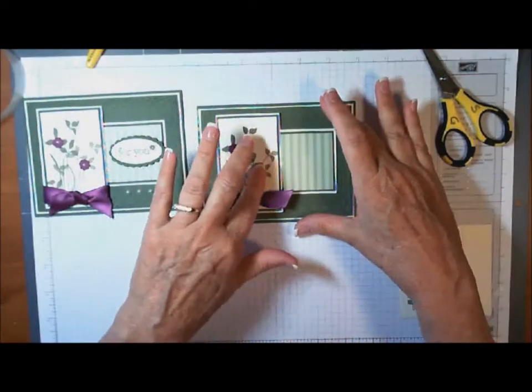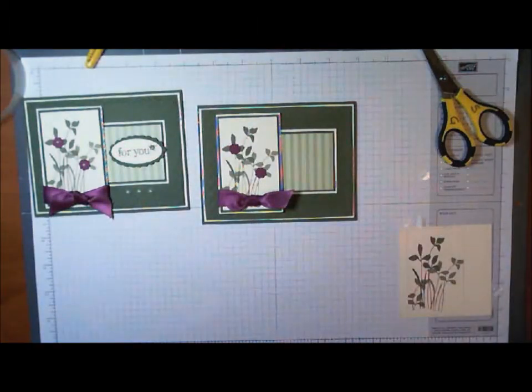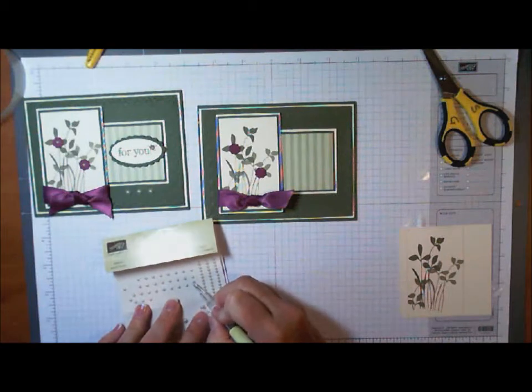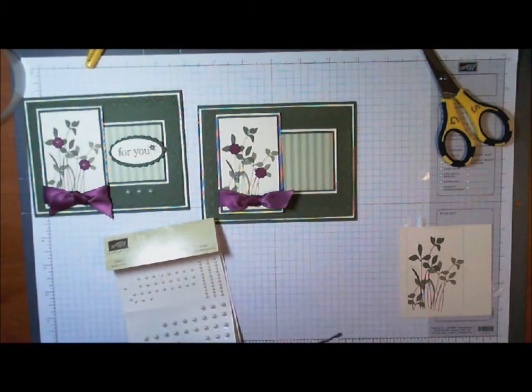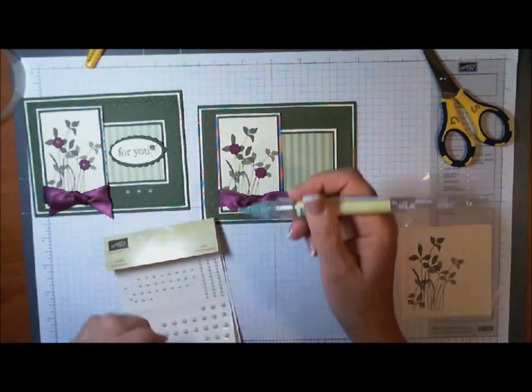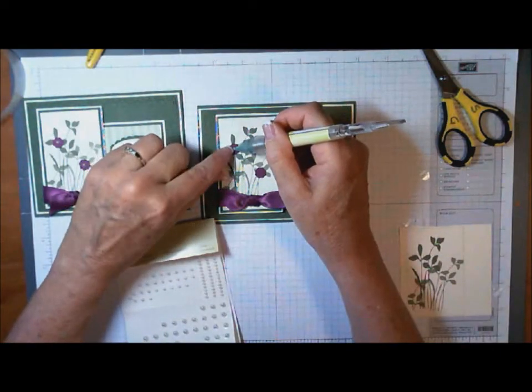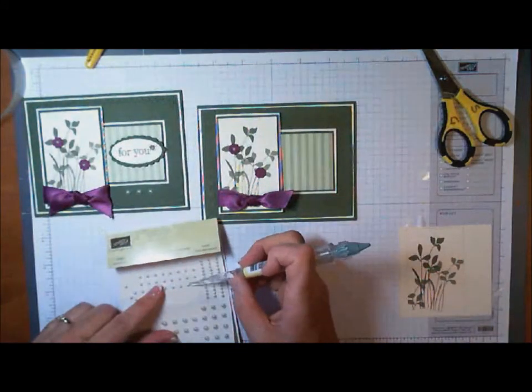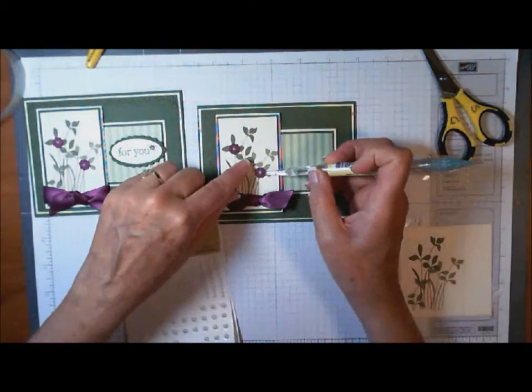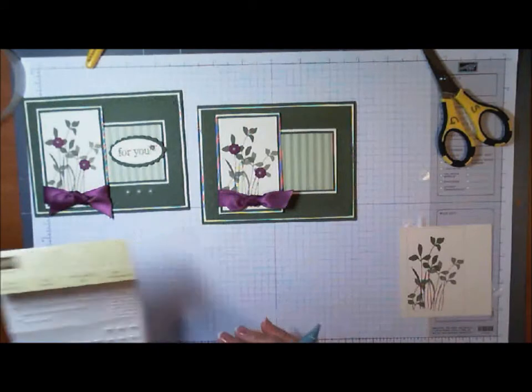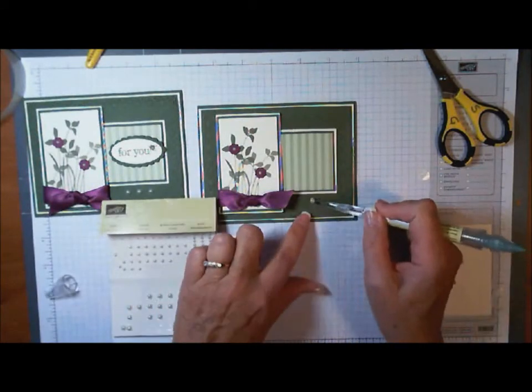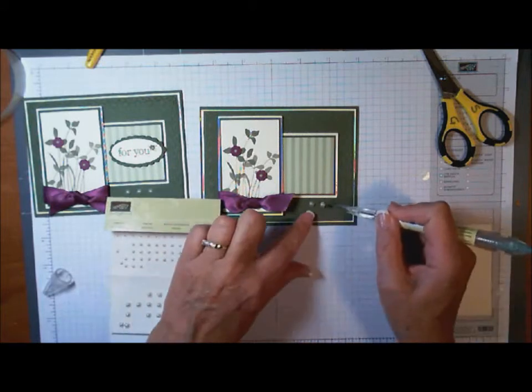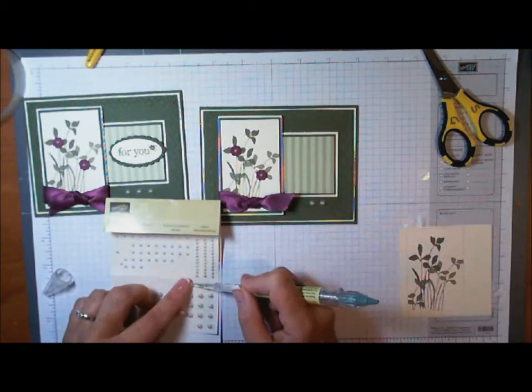Now I'm going to put a couple of little pearls in the center of each one of those, and once again, I'll just use my little tool. These are the Stampin' Up Pearls. They already have adhesive on them, so once you loosen them from the pack, you can just pick them up if you have something like this to stick them with, and they will just lay right down. They have just enough sticky to hold them on. Down here in the center, and these are the larger ones. The package of Stampin' Up Pearls has three sizes in it.